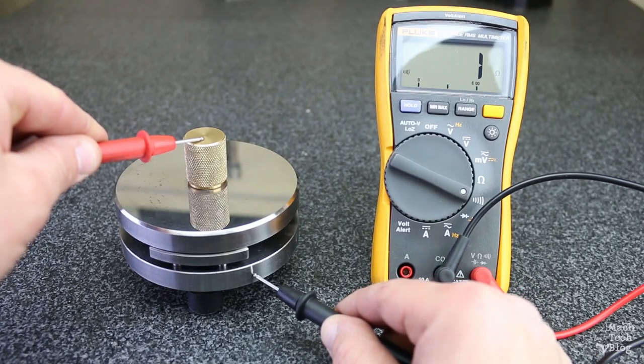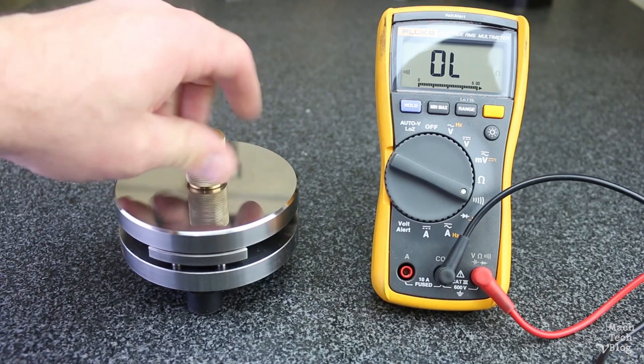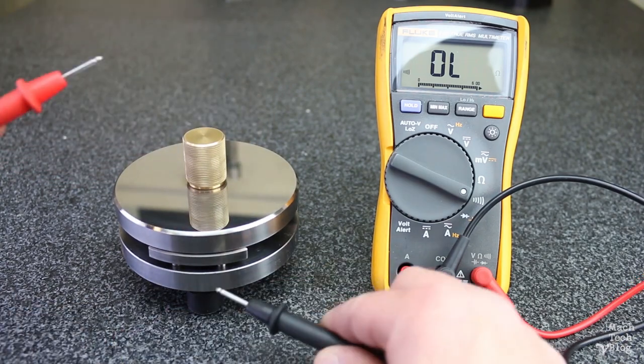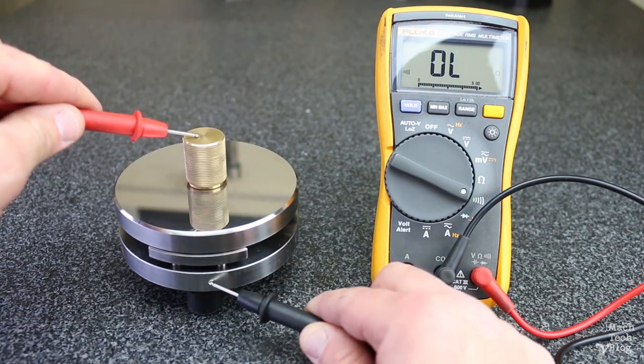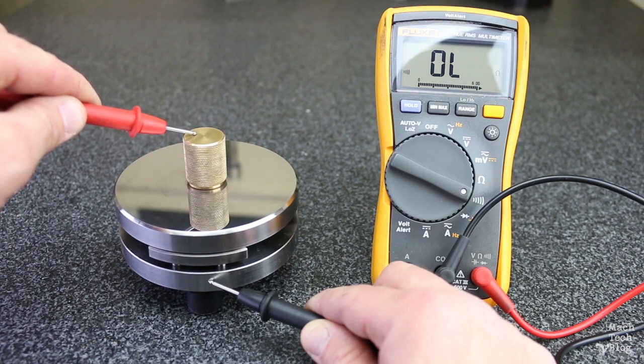It's easy to prove this using the continuity testing feature on a multimeter. When the disc is at rest, the surfaces are touching and the electrical circuit between the stationary components and the rotating components is closed. But when the disc is rotating, the surfaces are not touching at all and so the electrical circuit is open. Notice that as the disc slows down, it begins to make intermittent contact with the pads until at last it comes to a full stop and the electrical circuit is closed again.